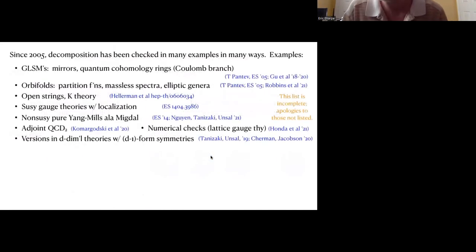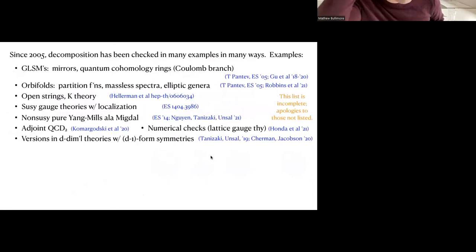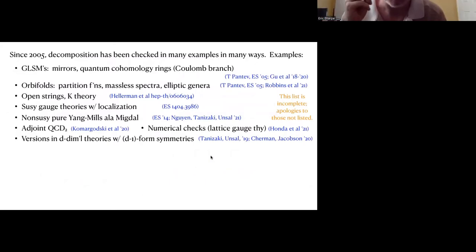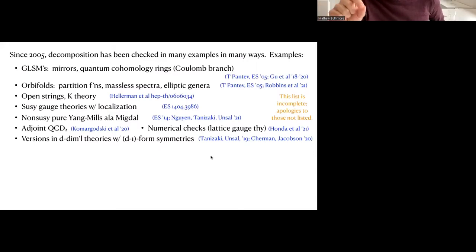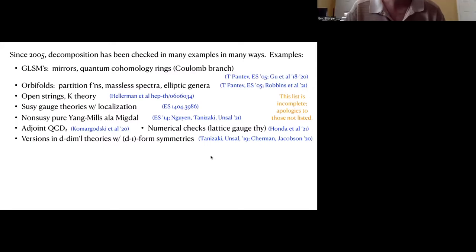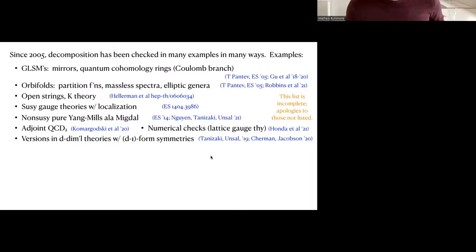If I've been doing my job... Eric, can I ask a question? Please do. In the connection to the D minus one form symmetries, it's the idea that these are exactly the symmetries generated by topological local operators. Yes. You should think about each of those non-identity topological operators as like the identity of another universe. Yes, and then the projectors are built as linear combinations of those topological local operators. That's definitely part of this story, and we'll see concrete examples of that later.